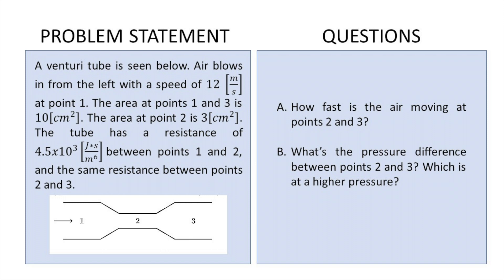We have a Venturi tube and air is flowing from the left to the right at 12 meters per second at point number 1. The area at points 1 and 3 is 10 centimeters squared, the area at point 2 is 3 centimeters squared. The tube has a resistance of 4.5 times 10 to the 3 joules second meters to the 6 between points 1 and 2, and the exact same total resistance between points 2 and 3.